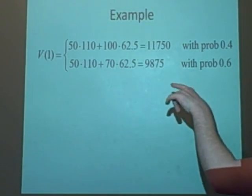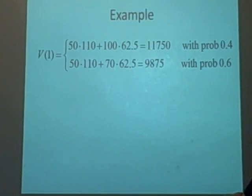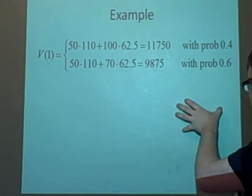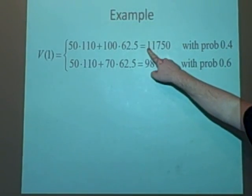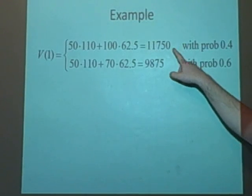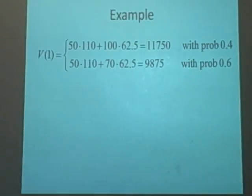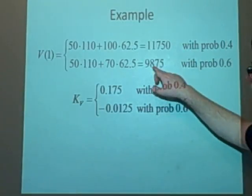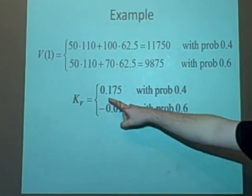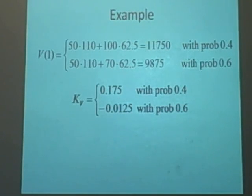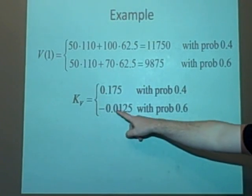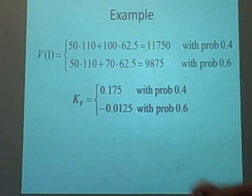So for that we use the KS formula, which was the new value minus the old value divided by the old value. So we'll have 11,750 minus 10,000 because that's what we started with, divided by 10,000. And the same for here as well. So it'll either increase by 0.175 with probability 0.4, or decrease by 0.0125 with the probability 0.6.